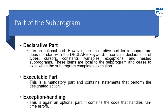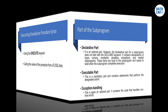The executable part contains the statements that perform your designated action. The exception handling part is also optional — it contains the code that handles runtime errors. When you are executing and some errors occur, they will be caught in the exception handling section. That covers the parts of a subprogram.